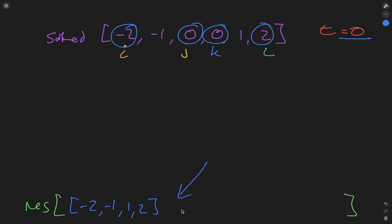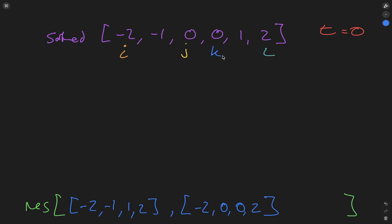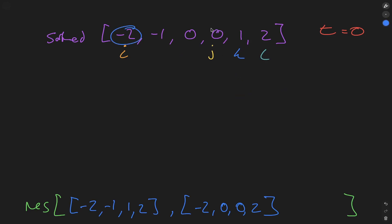Zero plus zero plus two equals the target of zero, so we push these values into res. Because these values equal the target, we increment k and decrement l, but first check if the next k value equals the current k and if l's previous value equals the current l — skipping duplicates if so. k and l land on the same point, so k is no longer less than l, and we increment j. Adding those values up, they don't equal the target and there's nowhere else to move in the loop.